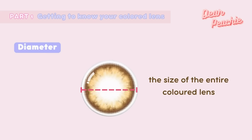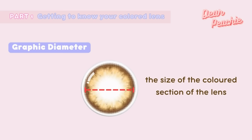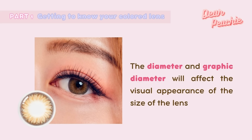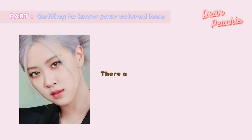Next, diameter — this is the size of the entire colored lens. And graphic diameter — this is the size of the colored section of the lens. Both the diameter and graphic diameter will affect the visual appearance of the size of the lens on your eye.